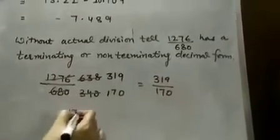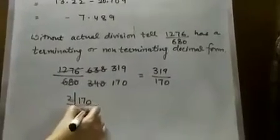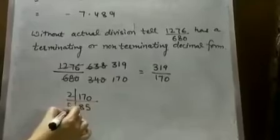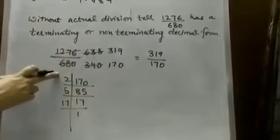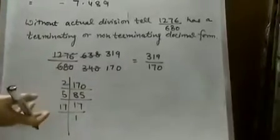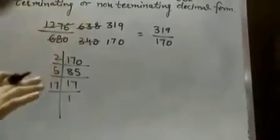Now, we are going to find the prime factorization of the denominator, 170, divisible by 2, 85, is divisible by 5, 17. Now, we know that if all the prime factors are either 2, either 5 or 2 or 5, only in that case, this is a terminating decimal form.